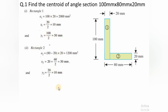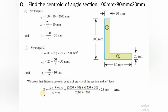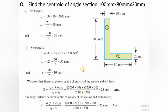Now we find x̄ and ȳ. x̄ = (A1×x1 + A2×x2) / (A1 + A2) = (2000×10 + 1200×50) / (2000 + 1200) = 25 mm. That is the centroidal distance from the vertical reference axis. ȳ = (A1×y1 + A2×y2) / (A1 + A2) = 35 mm from the horizontal reference axis.